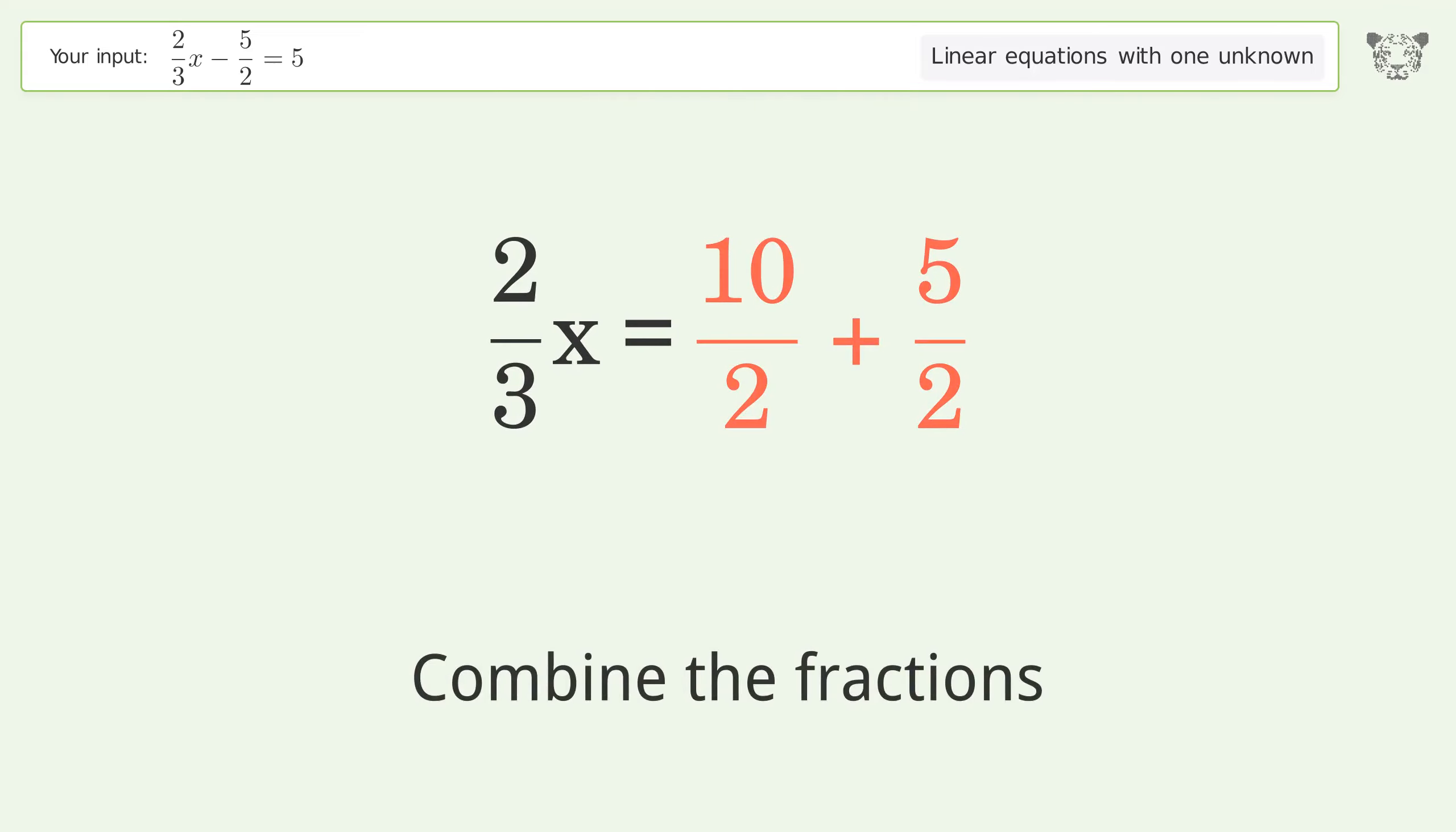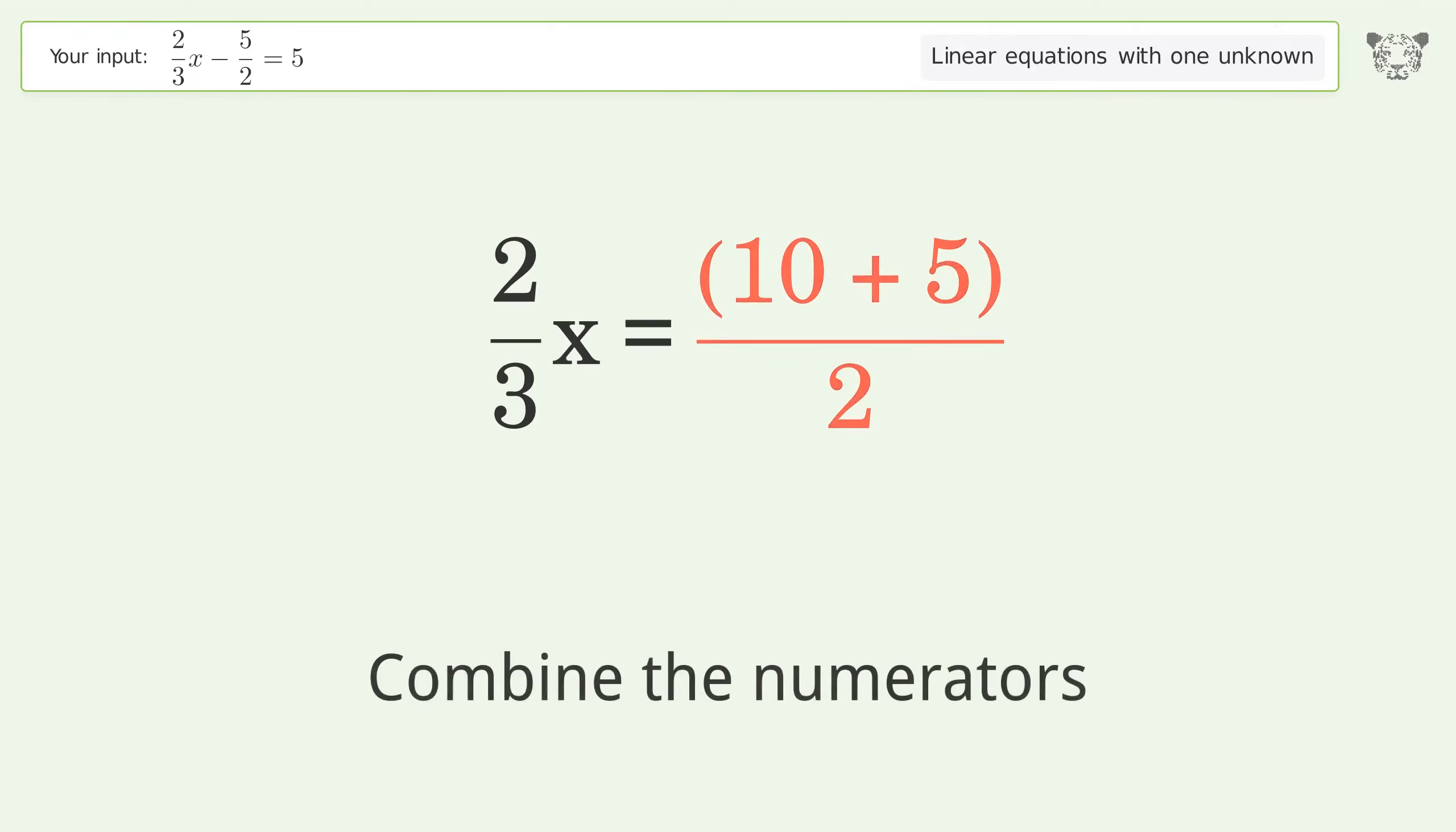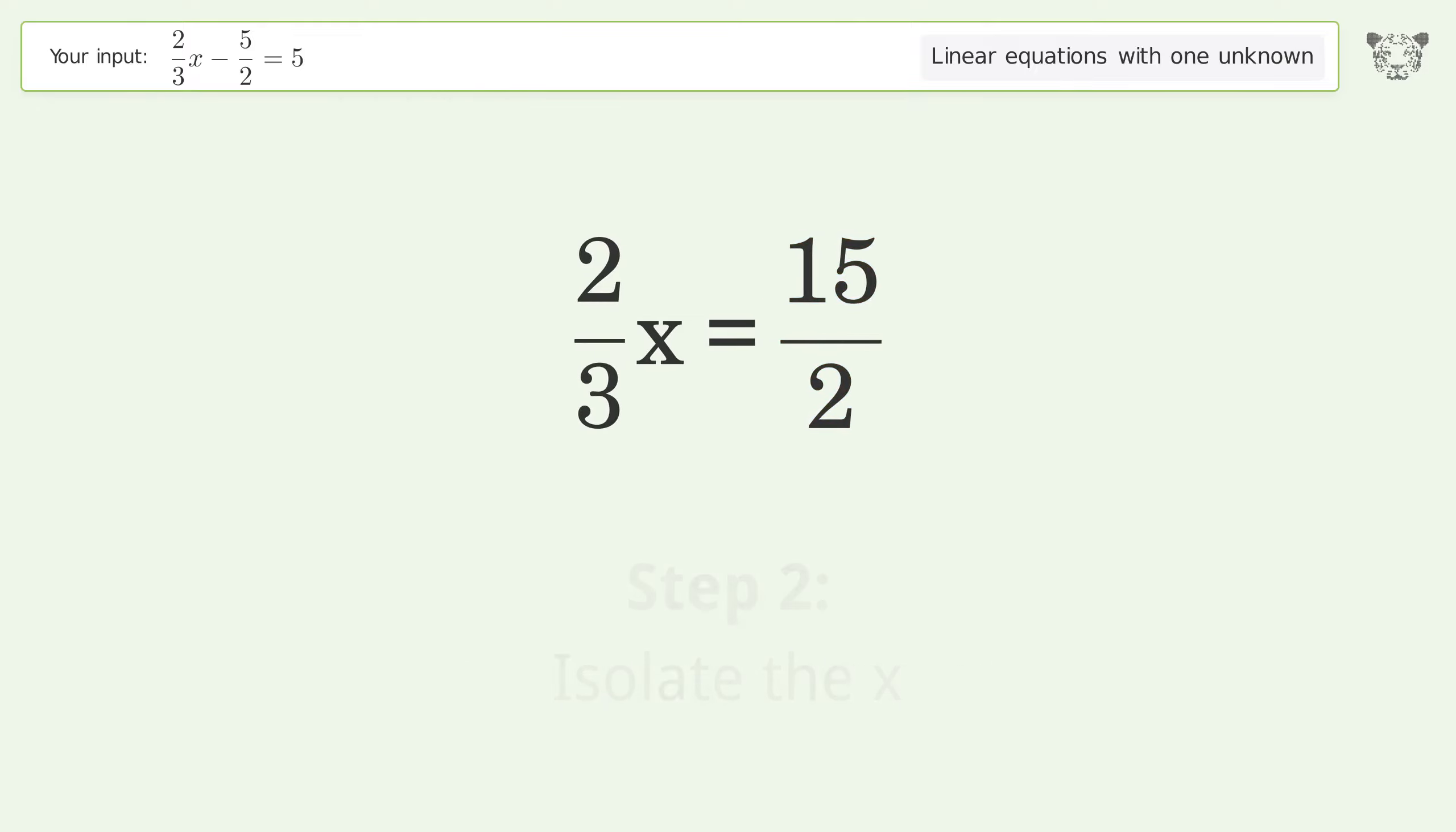Combine the fractions and combine the numerators. Now isolate the x by multiplying both sides by the inverse fraction 3 over 2.